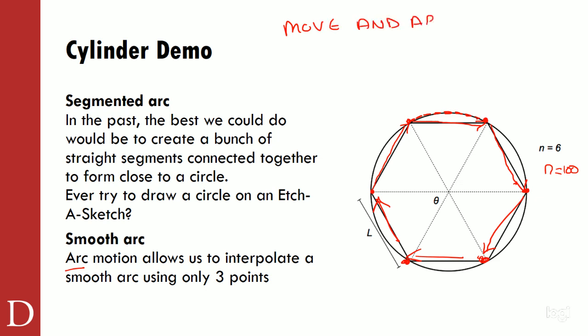We now have this nice arc command. The two I want you to pay attention to are MOVE and ARC. MOVE is our linear — in CNC we'd call that G01. And ARC is our circular. In CNC we have G02 and G03 for clockwise or counterclockwise. In robotics, we define direction by the order the points come — whether it's clockwise or counterclockwise. To create a smooth arc, I need to define a first point, a second point, and a third point, and the robot will interpolate a smooth arc between those points.